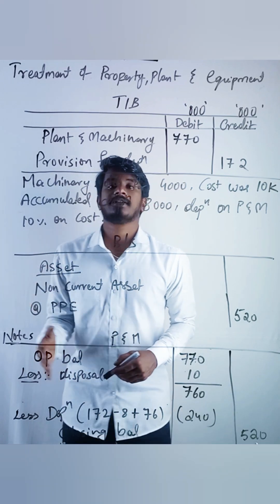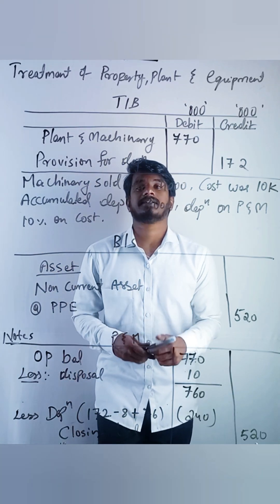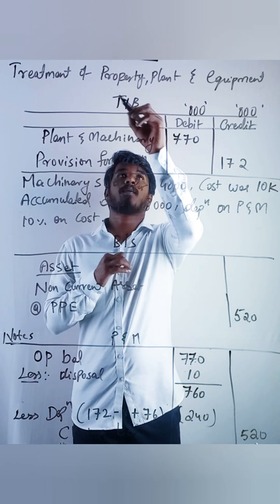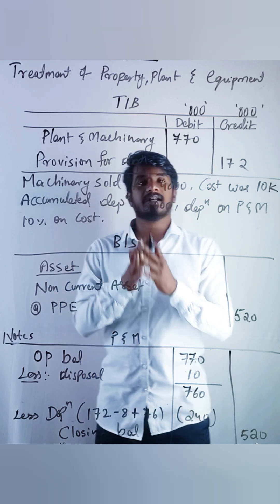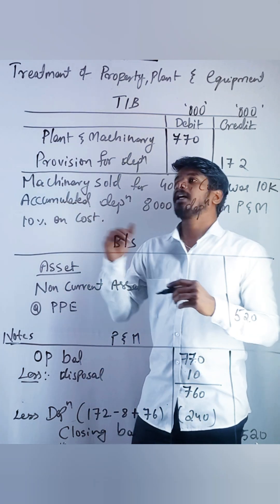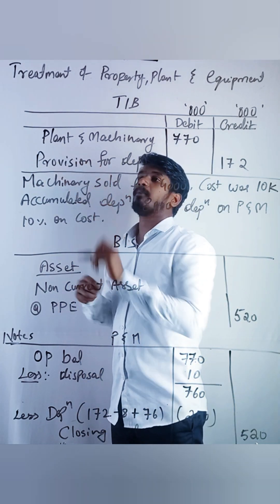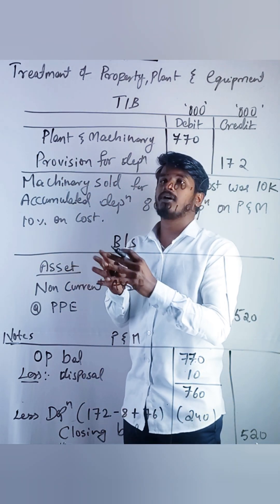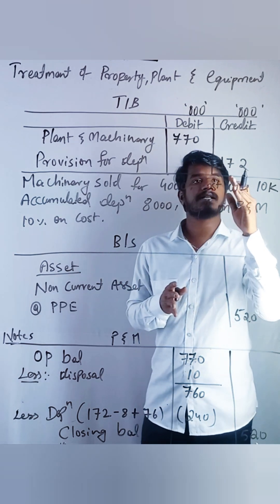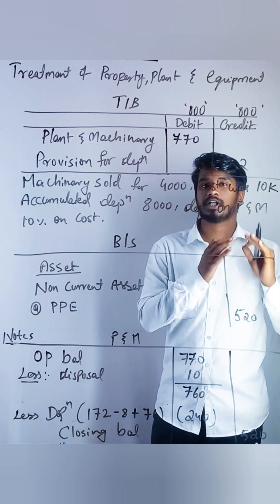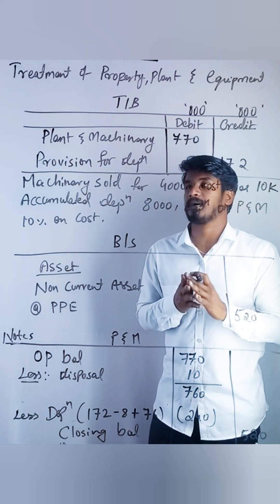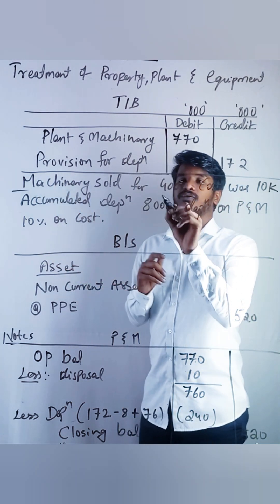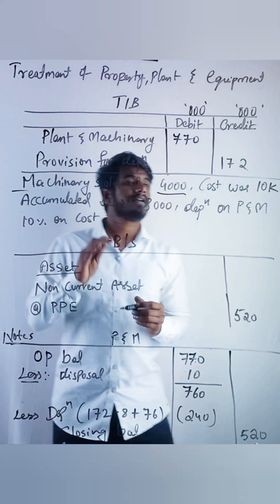In this video we will learn the treatment of property, plant and equipment. In the given question we have plant and machinery 770 and provision for depreciation 172 in the trial balance. Some machinery was sold for 4,000.